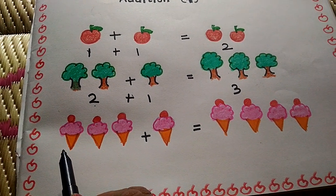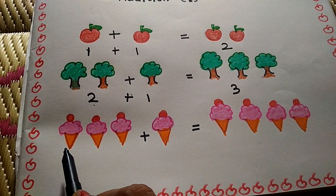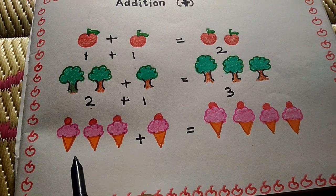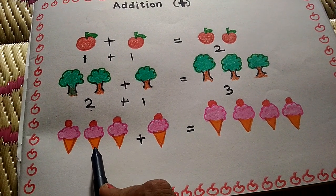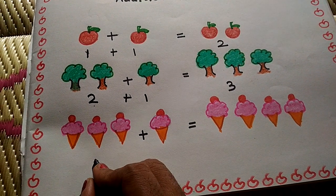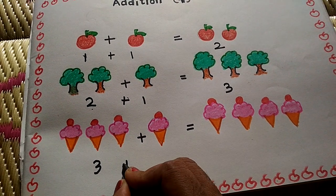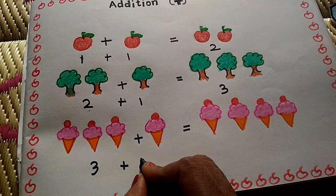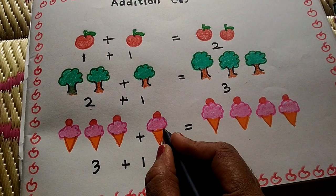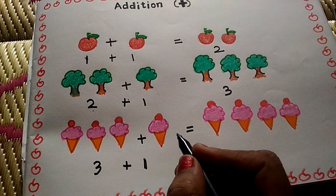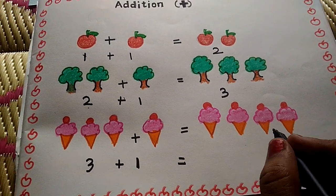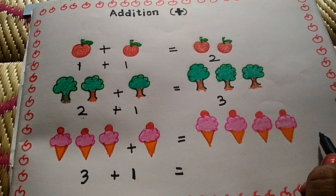See here, one more example. How many ice creams here? Count it. One, two, three. Three ice creams. Three plus one. How many ice creams here? One ice cream. So I write one here.